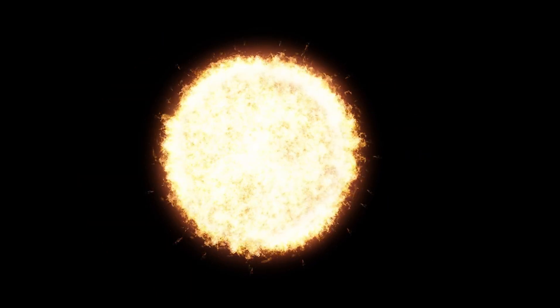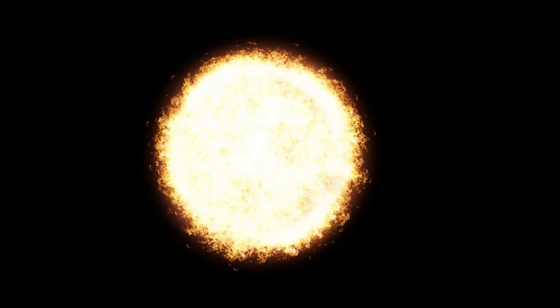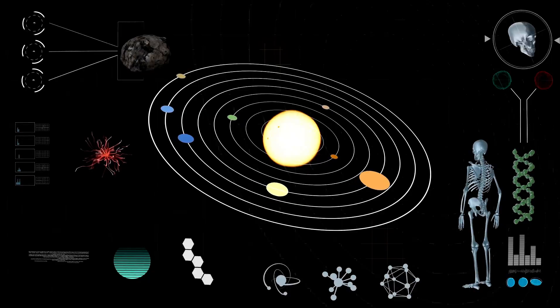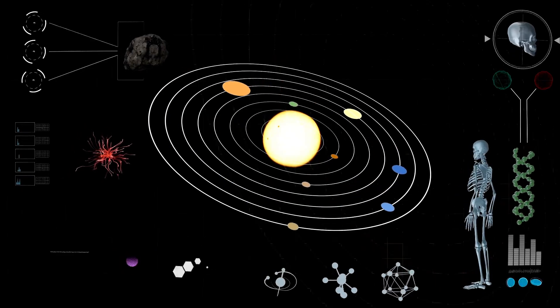At approximately 764 times the size of our Sun, Betelgeuse is an absolute giant of a star. To put this into perspective, imagine a star so massive that if it were to replace our Sun, its surface would extend well beyond the orbit of Mars.